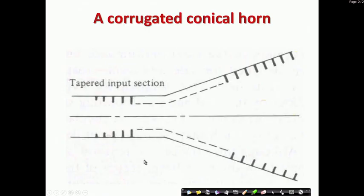Welcome to this NPTEL lecture on Reflector Antenna Systems. Before going there, in the last lecture we discussed the corrugated horn, but I forgot to show some diagrams. A corrugated conical horn has a tapered input feeding section, and near the aperture there is the corrugation in the radiating zone.